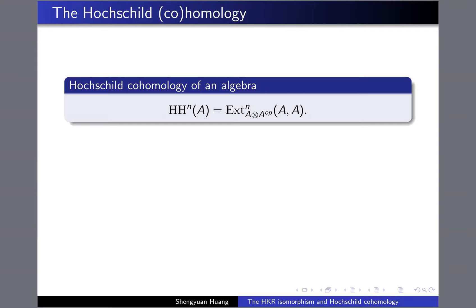If you start with an algebra A, in order to compute this Ext algebra, we need to resolve A as an A tensor A^op module. This is the standard bar resolution — the bar complex. You plug the bar complex into the Hom, then you compute the Ext algebra. This is the classical definition.